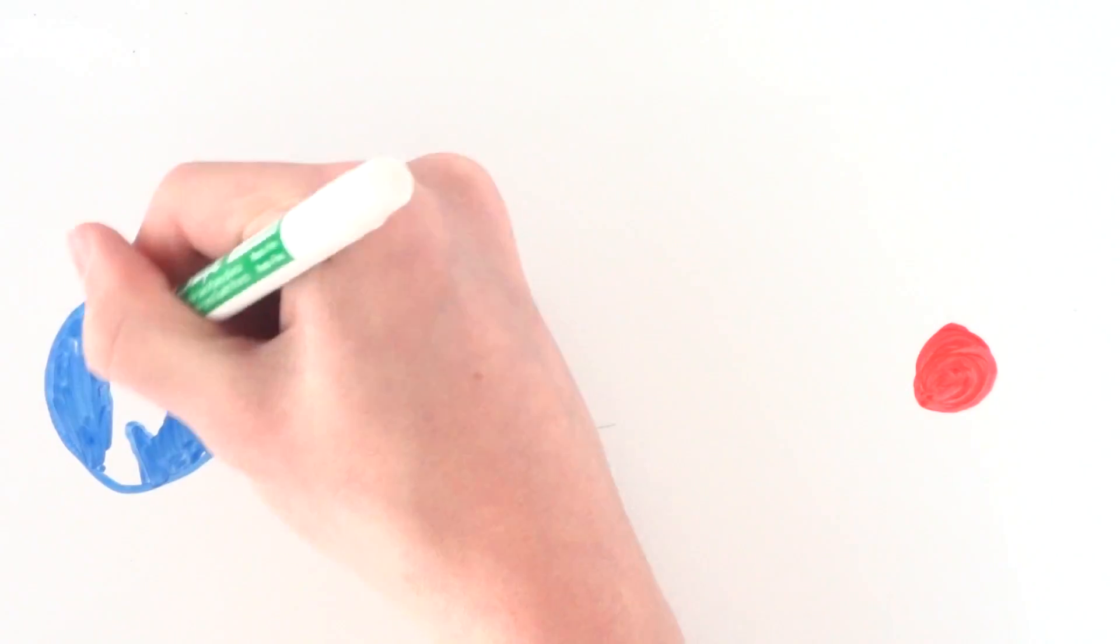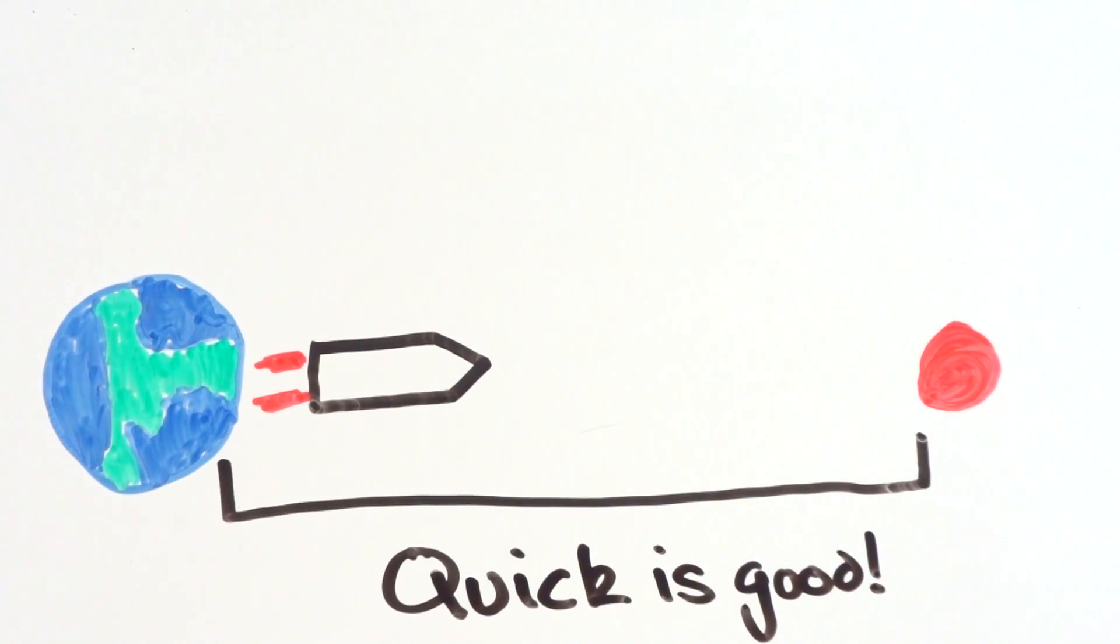So getting to Mars is going to take a long time, and if we want to get to the quickest route, we only have the time slot every two years. In the current state of technology, it's a lot easier to get a one-way ticket to Mars, which means you're stuck there until you die.